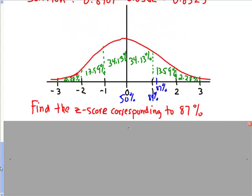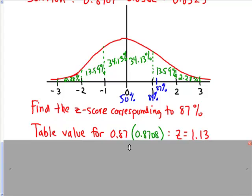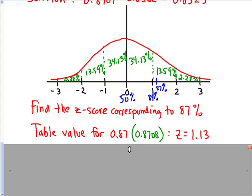So what we need to do here is, what we would do on the table, is we go into the body of the table, and we have to kind of search around, and we find that the closest to 0.87 is 0.8708, which corresponded to a z of 1.13.